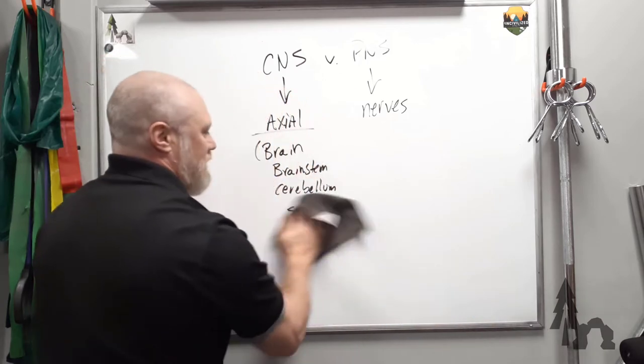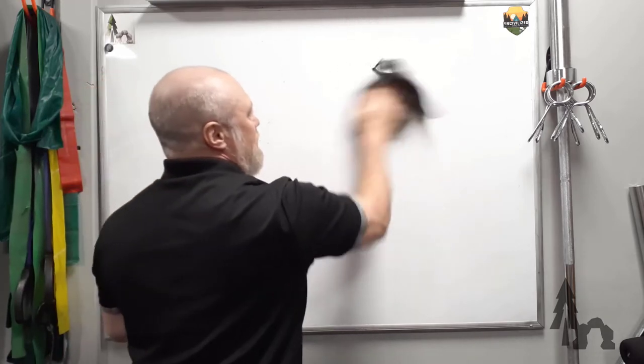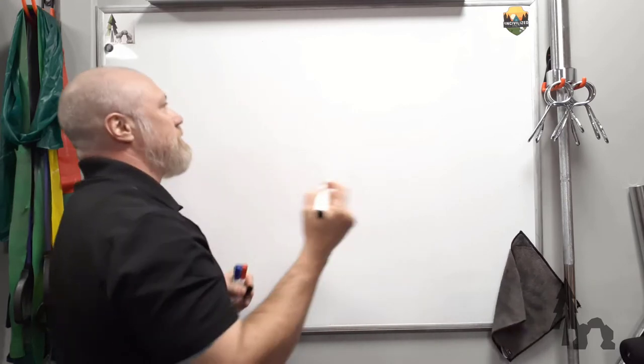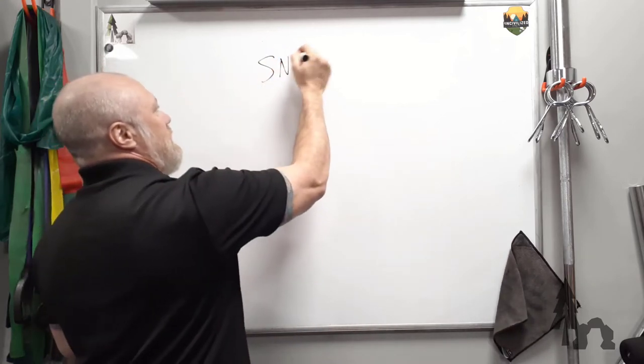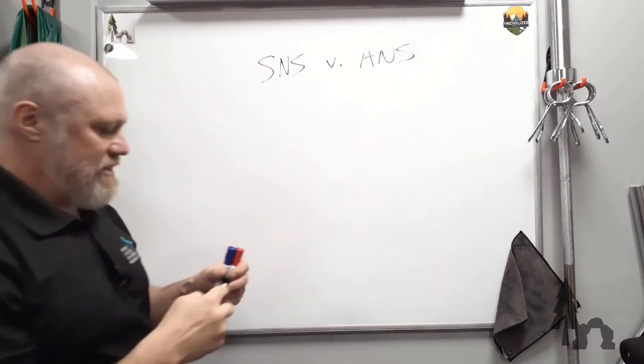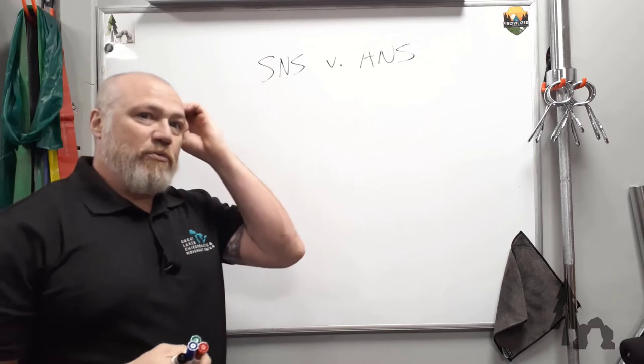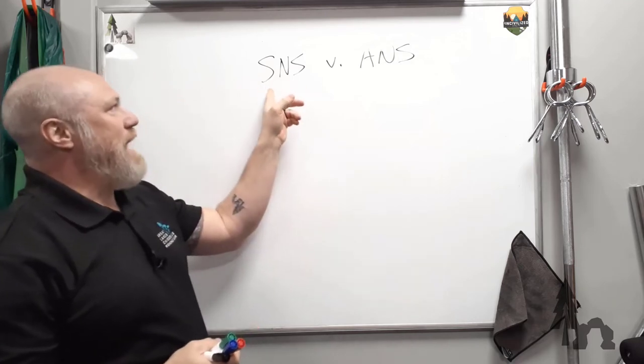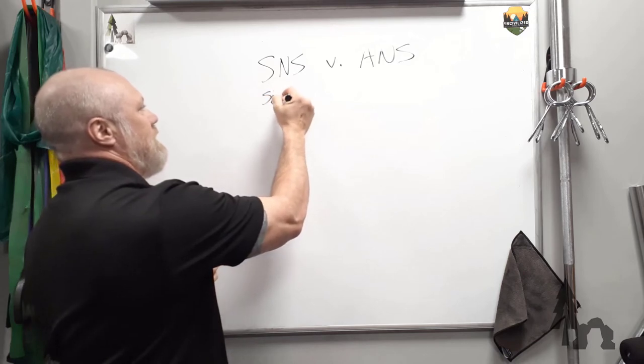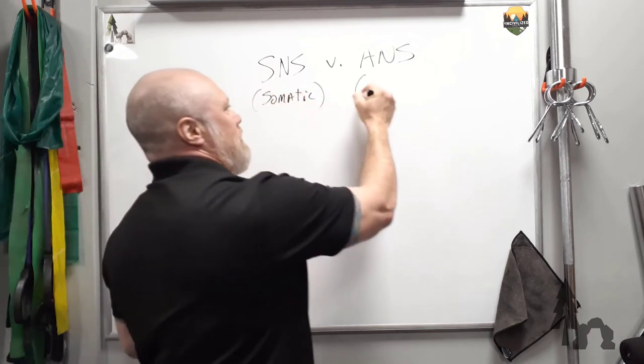That would be a structural or anatomic division. Another way to talk about the nervous system or think about the nervous system is functional. The SNS, the ANS. In this case, this would be more functional. This is how your nervous system works. There are two broad categories. The somatic nervous system, so somatic having to do with your body. Versus the autonomic nervous system.